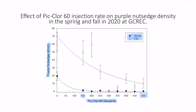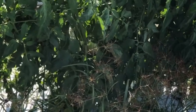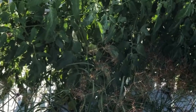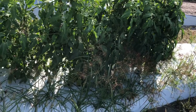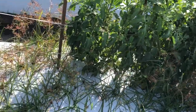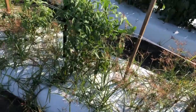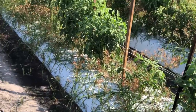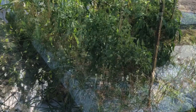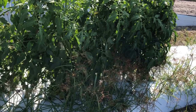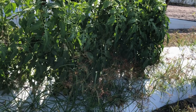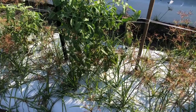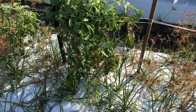Now let's go to the field and look at some pictures of what those plots look like. In this first image, you can see the non-treated control. Notice the number of purple nutsedge shoots that have punctured the plastic mulch — it's a very thick population that's going to compete with the tomatoes and make removing the plastic mulch more difficult. You can also see a lot of stunting of the tomatoes, disease issues — a good example of why we fumigate in Florida.